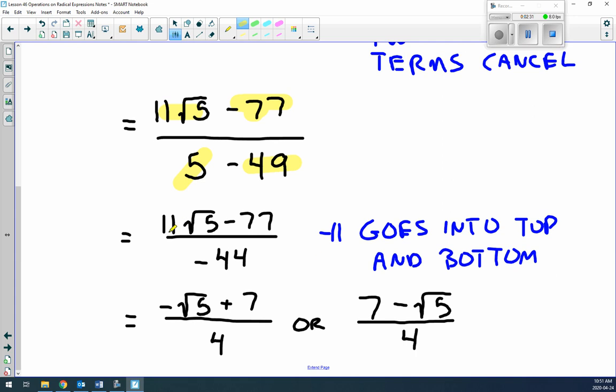Then we just keep working along here. 11 root of 5 minus 77 over negative 44. Is there something that goes into the top and bottom? When you remember top and bottom, something out of the 44 has to go into this first piece and the second piece. It just can't go into one. It has to go into both because they're separated by subtraction. We can take a negative 11 out of both. So we end up with negative root of 5 plus 7 over 4. Or if you wanted to, you can flip it around 7 minus root of 5 over 4. Either way is correct.